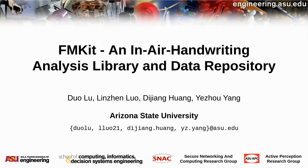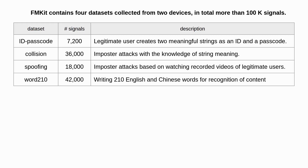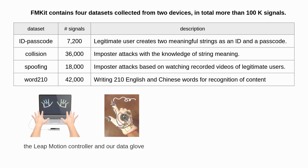In this project, we propose FMKit, an open source library and open datasets for in-air handwriting analysis. FMKit contains 4 datasets collected from over 200 users using a Leap Motion controller and a custom-made data glove with inertial measurement units. In total, there are over 100,000 pieces of hand movement signals.